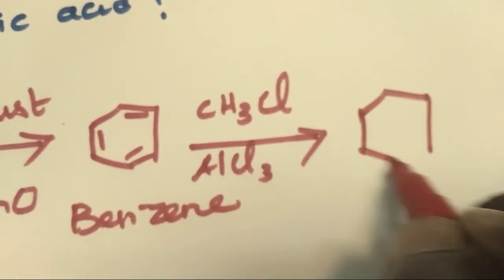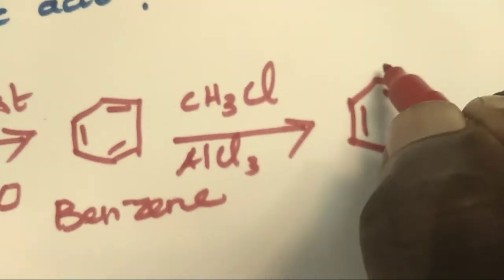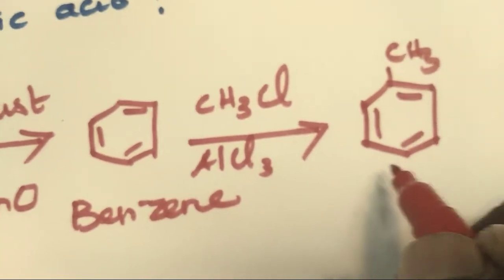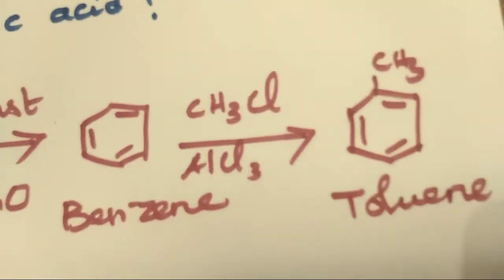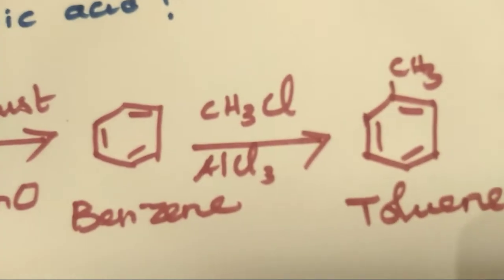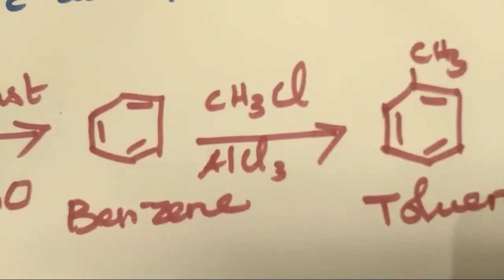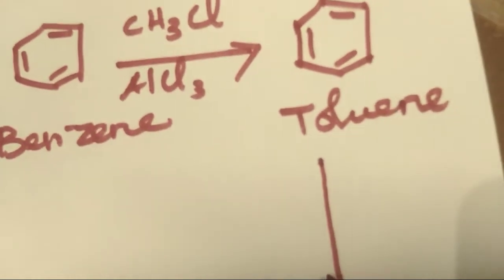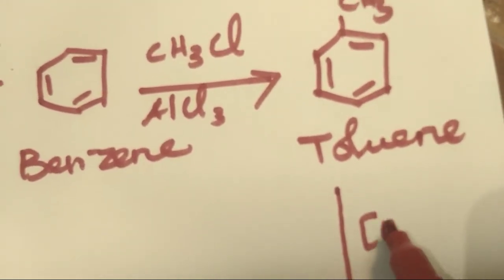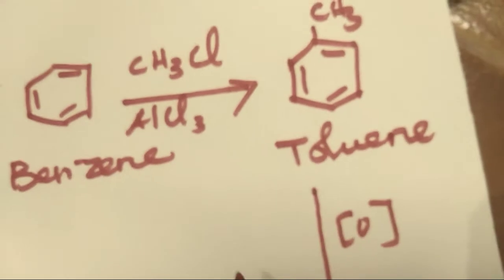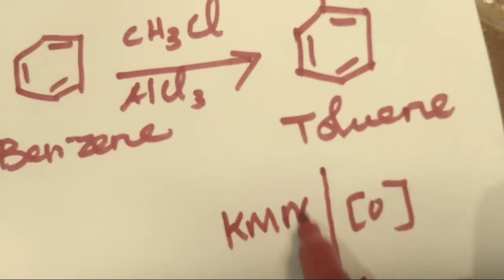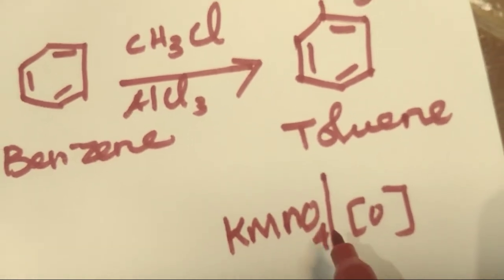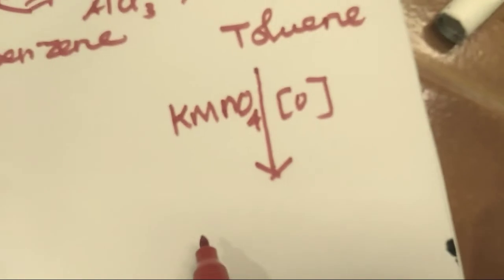Toluene is the common name. When toluene reacts with an oxidizing agent using potassium permanganate (KMnO4), the final product formed is benzoic acid.